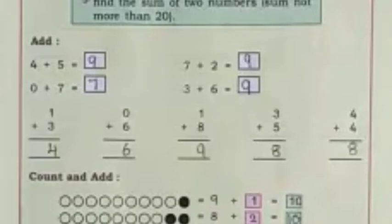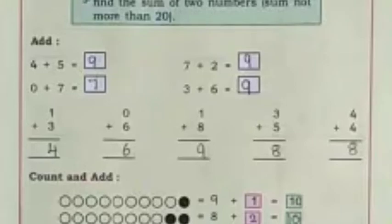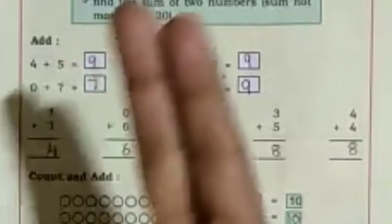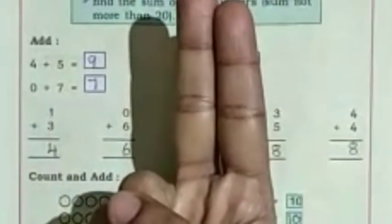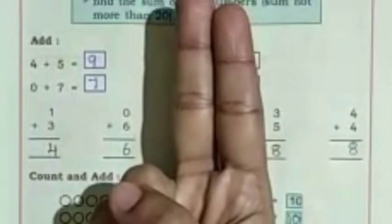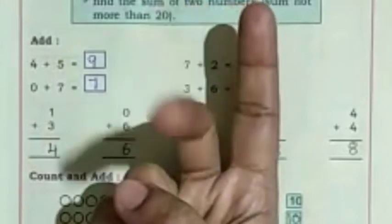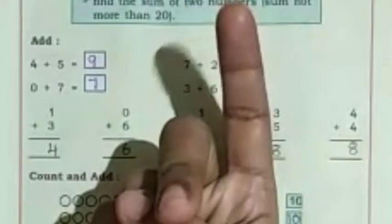7 plus 2. Which is the big number? Yes, 7. 7 in the mind, 2 on the fingers. After 7: 8, 9. 9 is the answer.